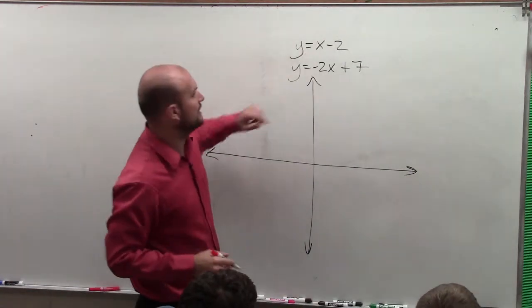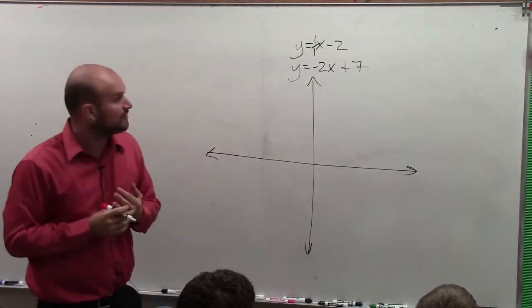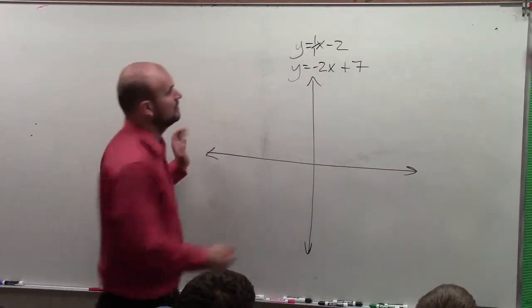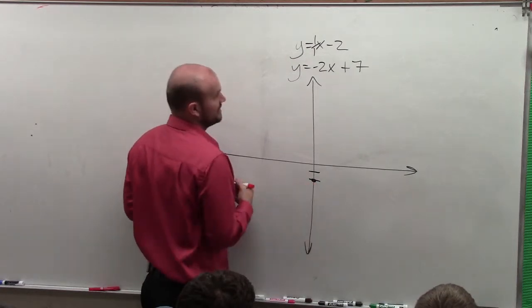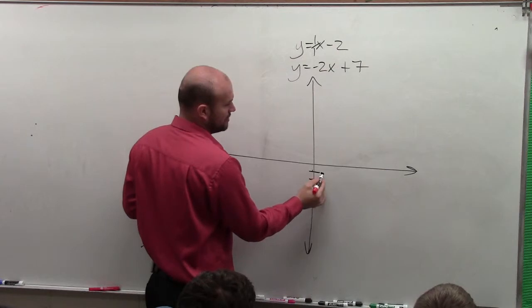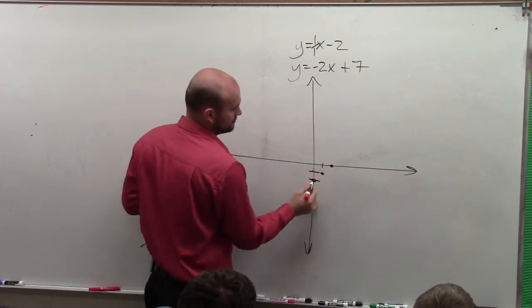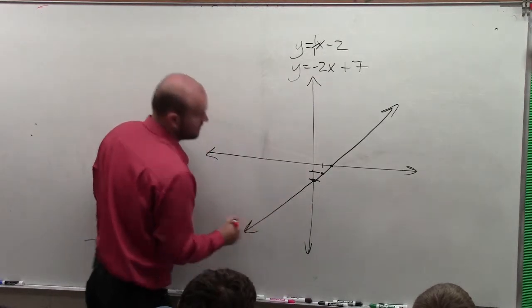First thing we need to do is identify the slope and the y-intercept. Notice if we don't have a value in front of the x, then we can write 1 over 1. Here, my y-intercept is negative 2. So go down to negative 2, and then my slope is positive 1 over 1. So I go over 1, up 1, over 1, up 1, and I can just follow that pattern. Everybody follows me?